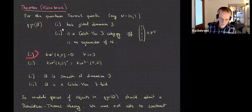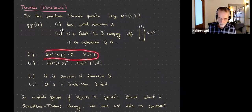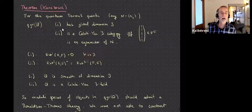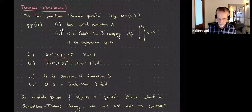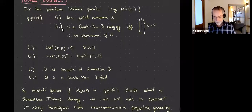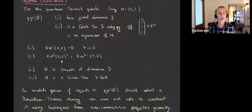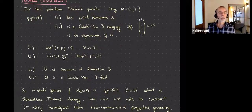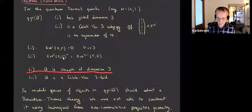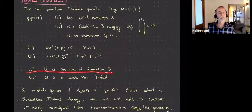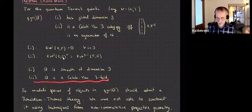What do these two conditions mean? Global dimension three means all Ext groups vanish for index bigger than three. The Calabi-Yau three condition means Ext^i(E, F) dualized equals Ext^{3-i}(F, E). This is an analog of: if you had a commutative Calabi-Yau threefold, these two conditions would hold in the category of coherent sheaves. So you should think of the first condition as this noncommutative Fermat quintic being smooth of dimension three, and the second as it being a noncommutative Calabi-Yau threefold.